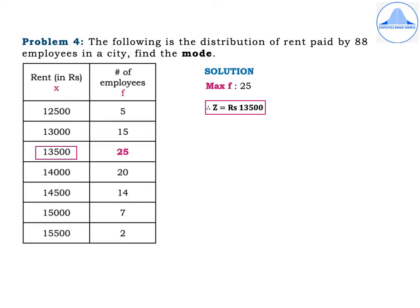Problem 4: Find the mode from the distribution of rent paid by 88 employees. Rent in rupees: 12,500; 13,000; 13,500; 14,000; 14,500; 15,000; 15,500. Number of employees: 5, 15, 25, 20, 14, 7, 2. Mark the first column as x and the second as f. Solution: The maximum frequency is 25 and the corresponding x value is 13,500. Therefore Z = Rs 13,500.